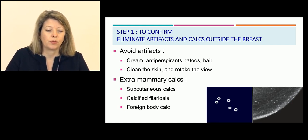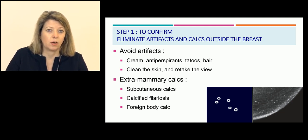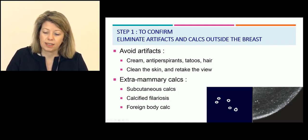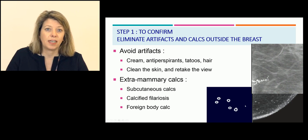Step 1 is to confirm whether it's a real calcification or not — the aim is to eliminate artifacts and calcifications outside the breast. To avoid artifacts, you have to avoid cream, anti-perspirant, tattoos, and hair on the fins. If you have a suspicion of artifacts, clean the skin and retake the view. Artifacts are usually seen in only one view. Common extramammary calcifications include subcutaneous calcifications visible in the skin, calcified filariasis (a parasitic infection also located in the skin of the breast), and foreign body calcifications.